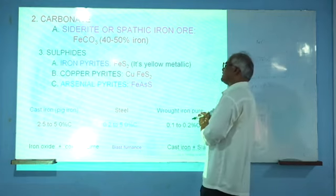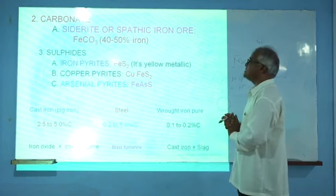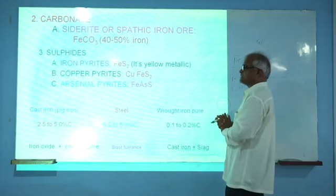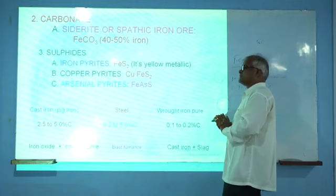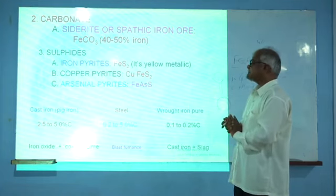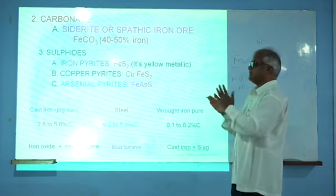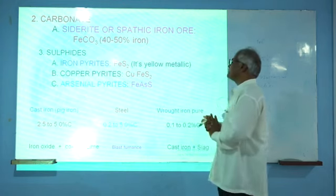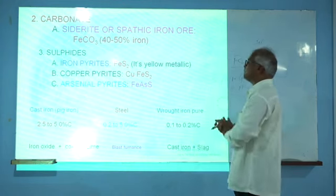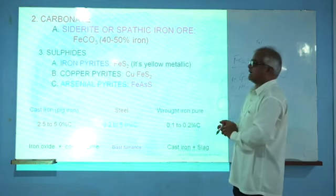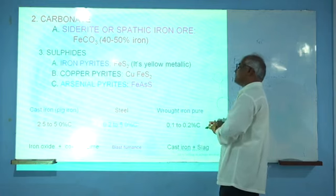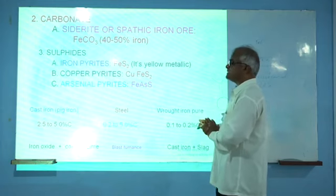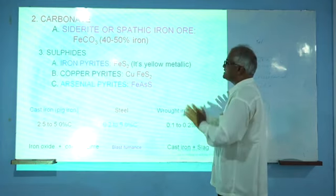The second type in sulphide is copper pyrite, CuFeS₂. The copper is an interfering radical in the presence of the iron content because copper is a second group radical, and it is unstable. It is not easily separated in the content of the copper pyrite. The copper acts as a binder. The third is arsenical pyrite, with maximum content of 40 to 60% iron. These are also separated generally.